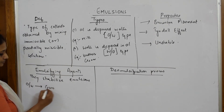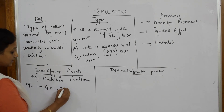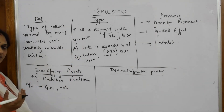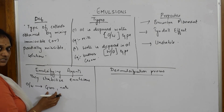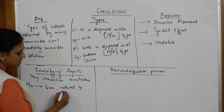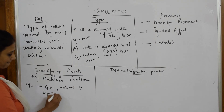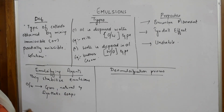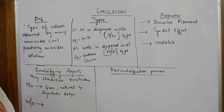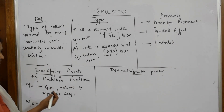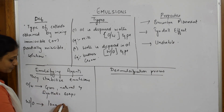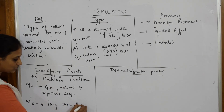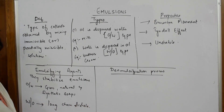Examples of emulsifying agents include gum, and natural and synthetic soaps, which can be used as emulsifying agents for oil-in-water type emulsions. For water-in-oil type emulsions such as butter and cream, long-chain alcohols can be used as emulsifying agents to stabilize that type.